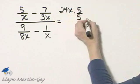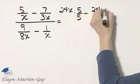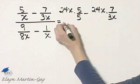So 24x times 5 over x minus 24x times 7 over 3x. Then in the denominator...